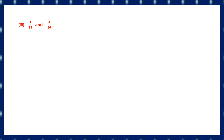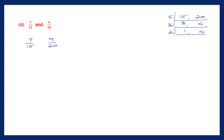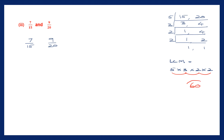Question 3: 7 by 15 and 9 by 20. We have to make the denominators equal, so let's find the LCM of 15 and 20. Starting with 5: 5 threes are 15, 5 fours are 20. Now use 3: 3 ones are 3, bring down 4. Use 2: 2 twos are 4. Continue with 2: 2 ones are 2. The LCM is 5 into 3 into 2 into 2. So 5 threes are 15, 15 into 2 is 30, 30 into 2 is 60. The LCM is 60.